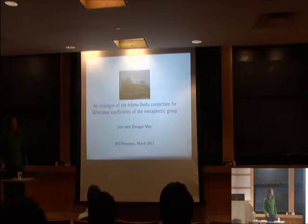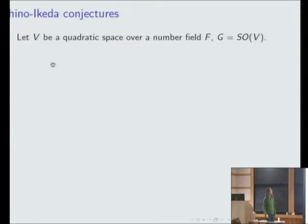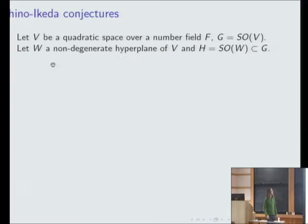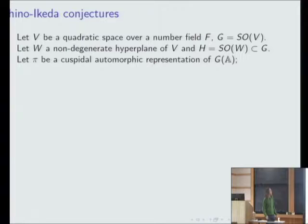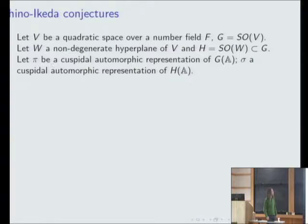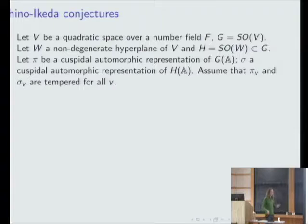So what is it about? Well, you start with the quadratic space over the number field V. You look at its orthogonal group or special orthogonal group, depending on your taste. You take an anisotropic vector and its perpendicular space, a hyperplane. So the stabilizer is a smaller orthogonal group of different parity. And now you take a cuspidal representation on the bigger group, a cuspidal representation on the smaller group. We give ourselves the assumption that pi and sigma are tempered at all places, or if you prefer, they are Ramanujan type. In any case, it's a conjecture, so we're allowed to assume what we want.